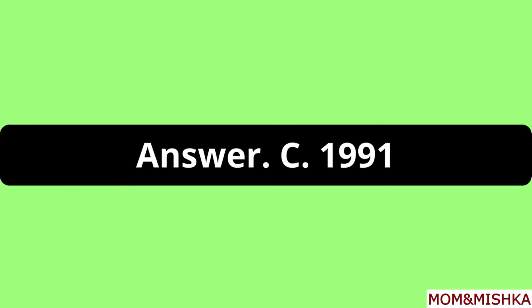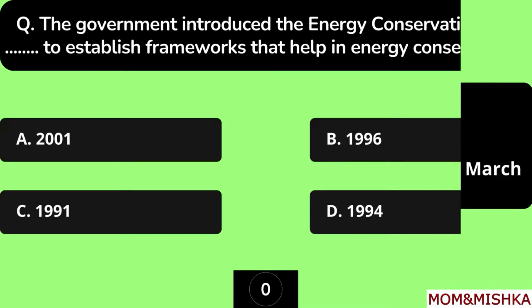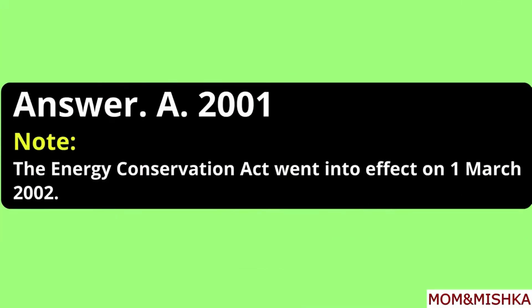Option C. The government introduced the Energy Conservation Act to establish frameworks that help in energy conservation. It's the Energy Conservation Act 2001, Option A. This act came into effect on 1st March 2002.